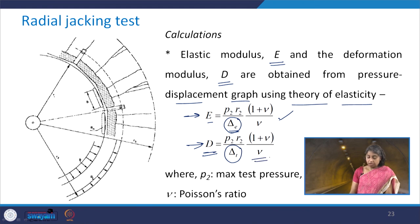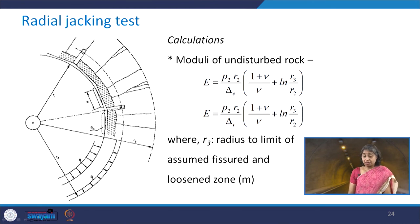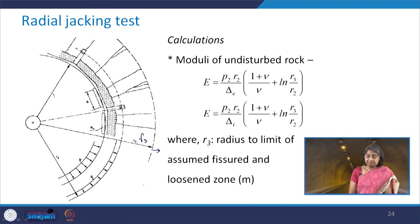The resulting expression is: D = p2 × r2 / δt × (1 + ν) / ν, where p2 is the maximum test pressure and ν is the Poisson's ratio. The modulus of the undisturbed rock can also be determined by anticipating a radial distance r3, beyond which there is no fissured or loose zone.